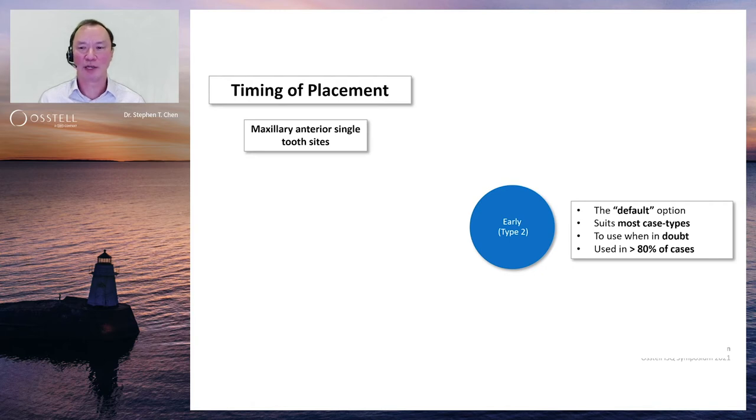So when you have any doubt, then the early implant placement approach, type 2 with soft tissue healing, is the one to default to. And in my practice today for these maxillary anterior cases, it represents about 80% of the cases that I treat.